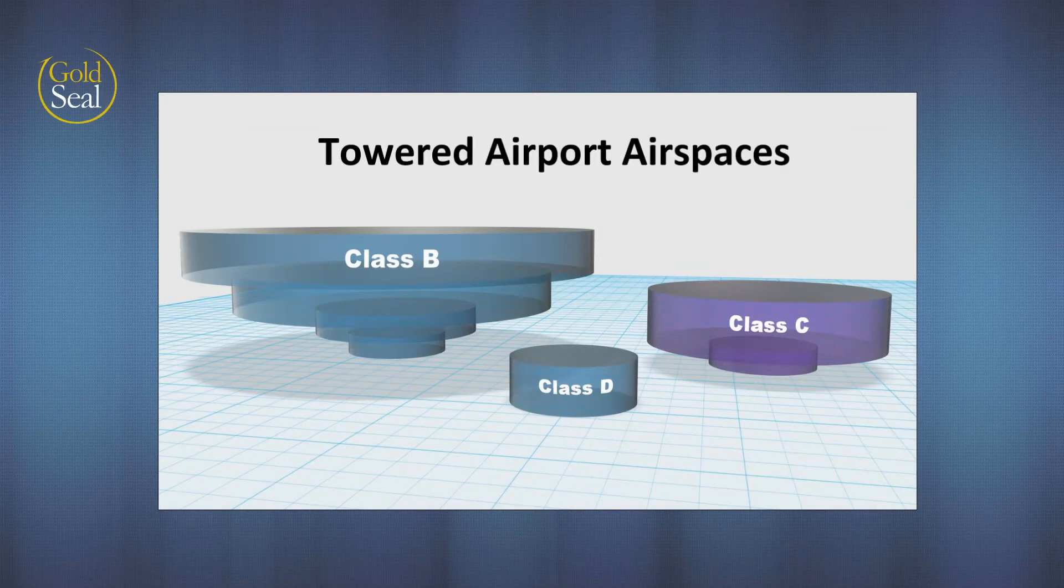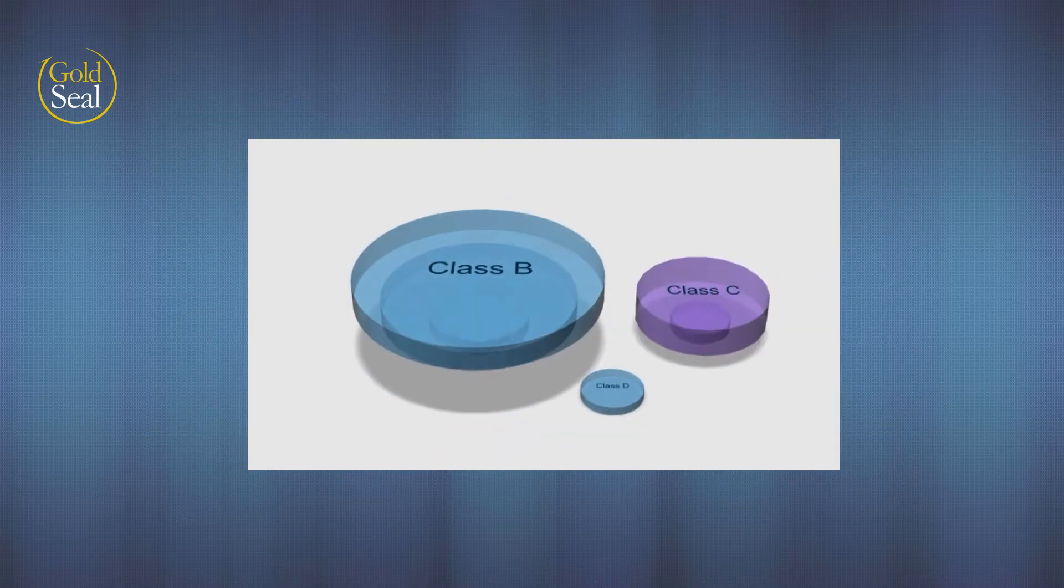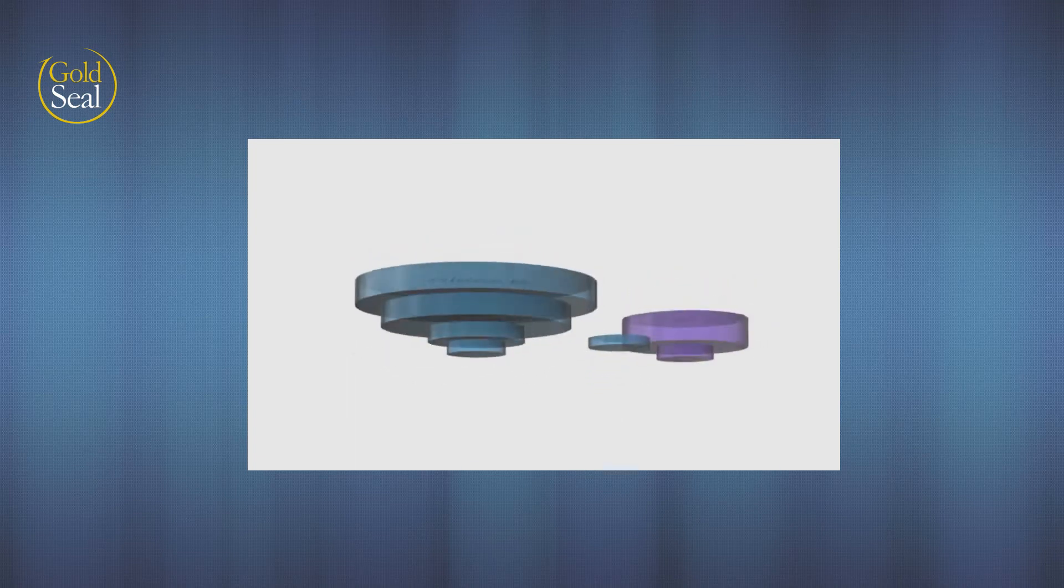As you've already heard, towered airports generally exist in either Class B, C, or D airspace. Temporary towers are sometimes used in other airspaces, but B, C, and D are the ones that we think of when we think of control towers.